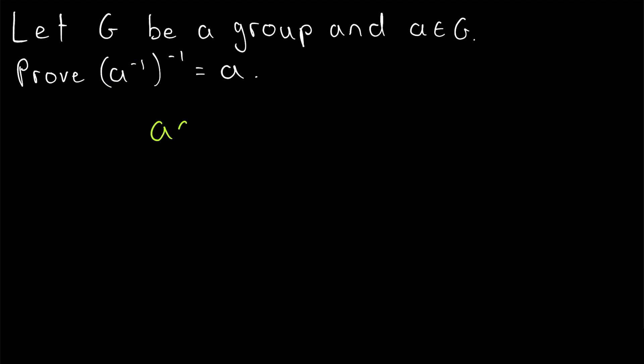It's basically a one-line proof. If we combine A with its inverse in this order, then this produces the identity element by definition of an inverse element. A combined with its inverse has to give the identity.